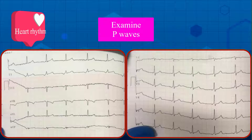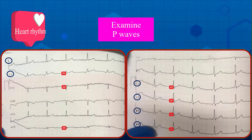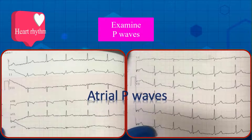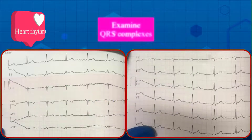One: locate and examine P wave morphology. We expect sinus P waves to be upright in D2, D1, and V3 to V6, but here the P waves are negative in D2, D3, AVF, V3 to V6, and upright in AVR. So the P waves are originating from the atria, not the sinus node.